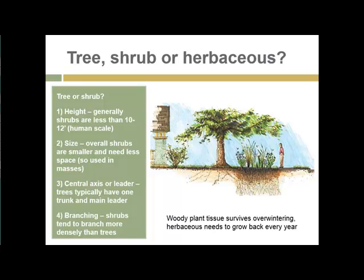Trees are generally much larger than shrubs. Shrubs are usually 10 to 12 feet at human scale, tend to have multiple stems, and create a bushier, fuller appearance at eye level. In both cases, the vegetation or at least the stems survive overwintering and return each year, making them valuable permanent members of the landscape, as opposed to annuals and perennials that completely die back each year.